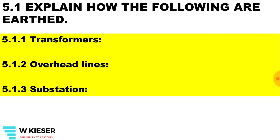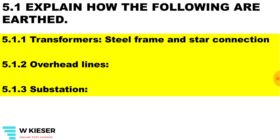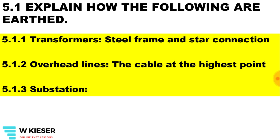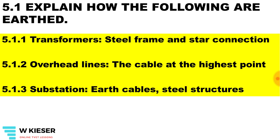Explain how the following are earthed. For transformers, the steel frame and the star connection on the star winding is earthed. For overhead lines, the cable at the highest point is earthed as well as the pylons connected to ground. For the substation, the earth continuity conductor is connected to ground and any steel structure is also connected to earth.